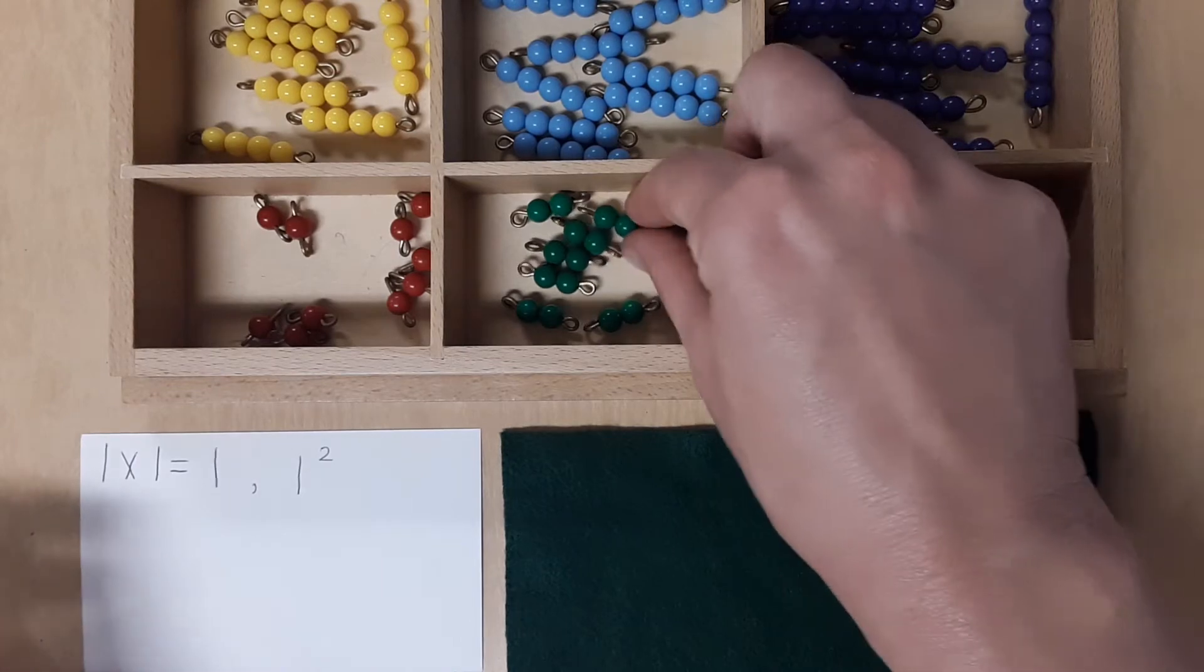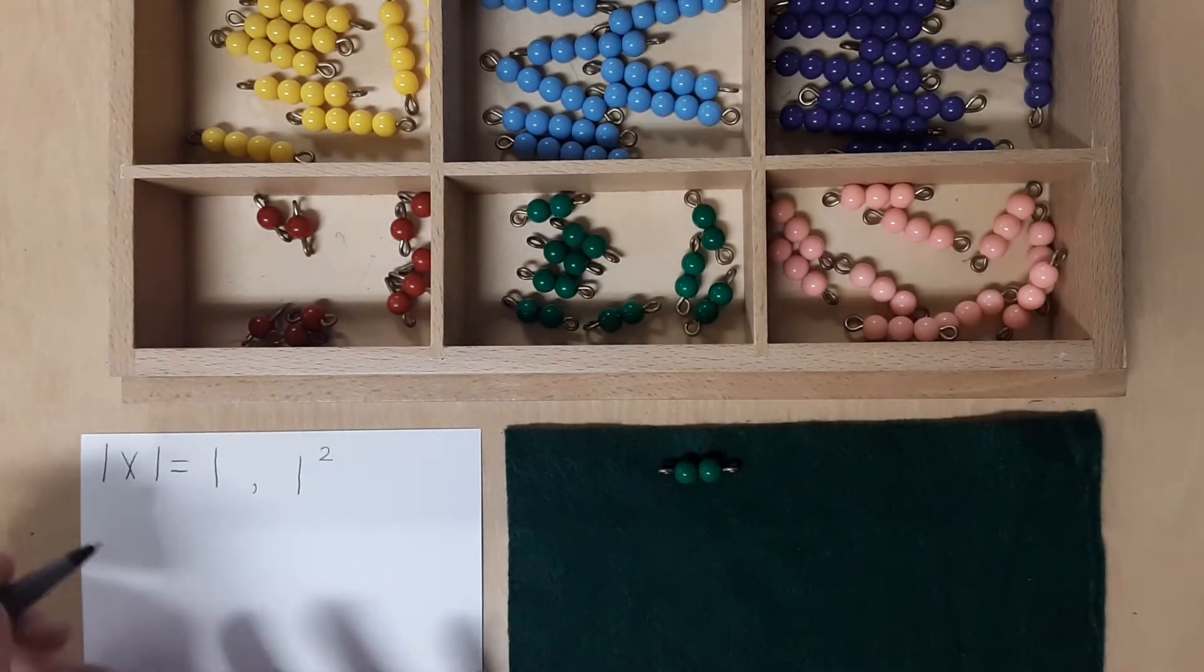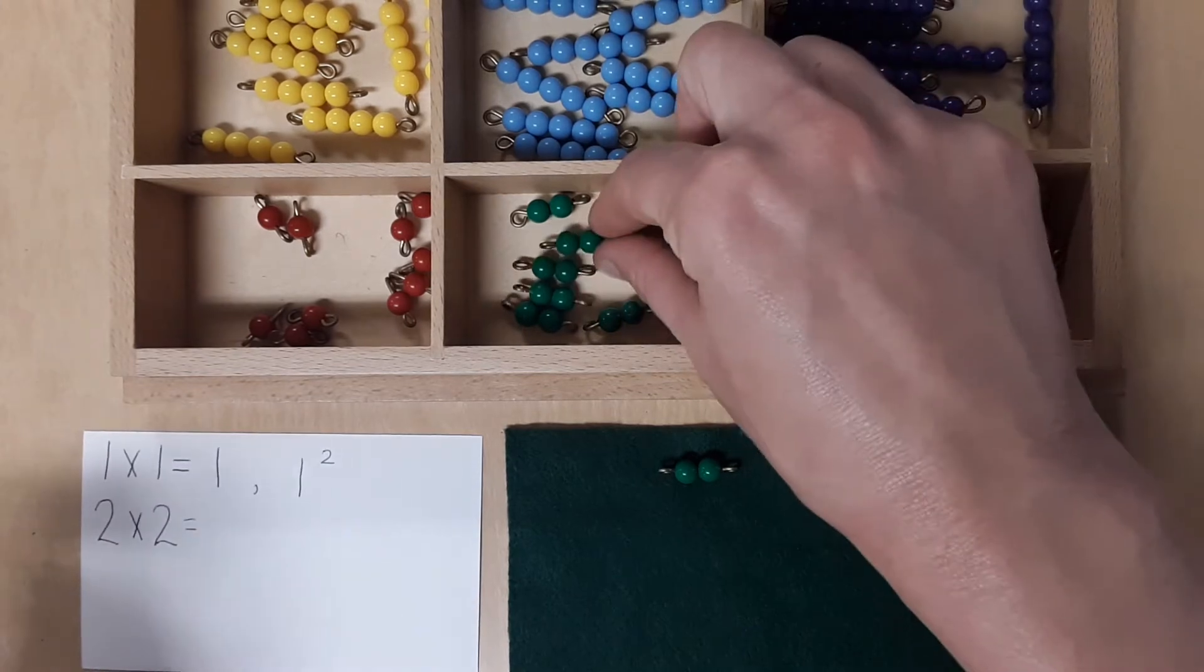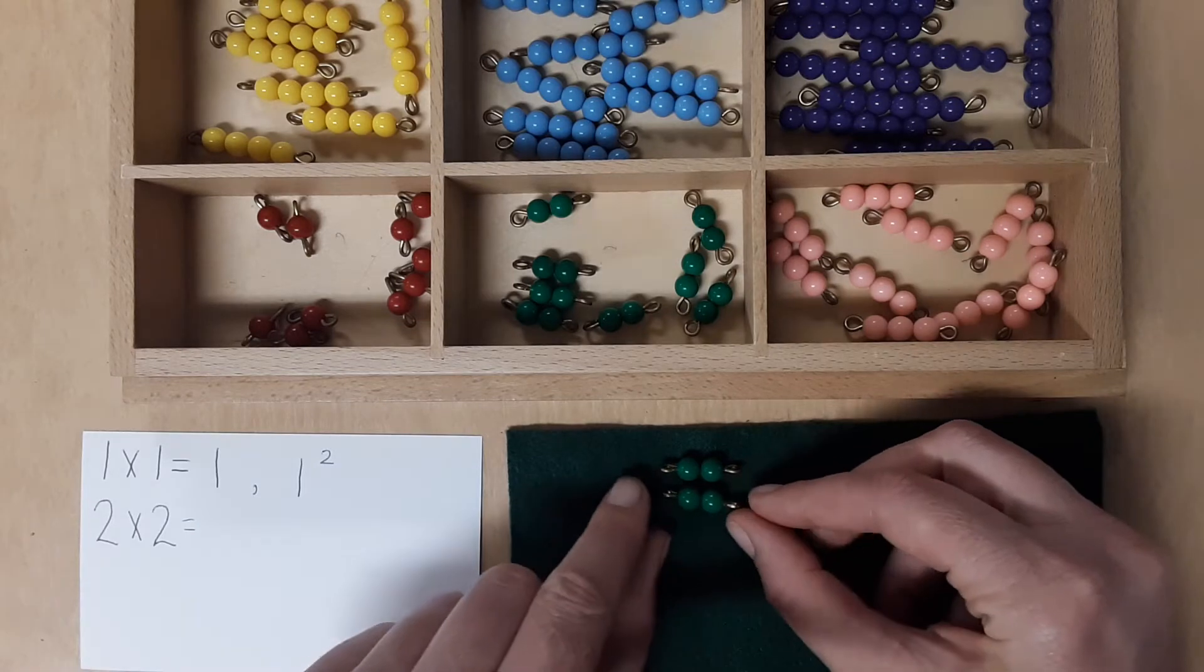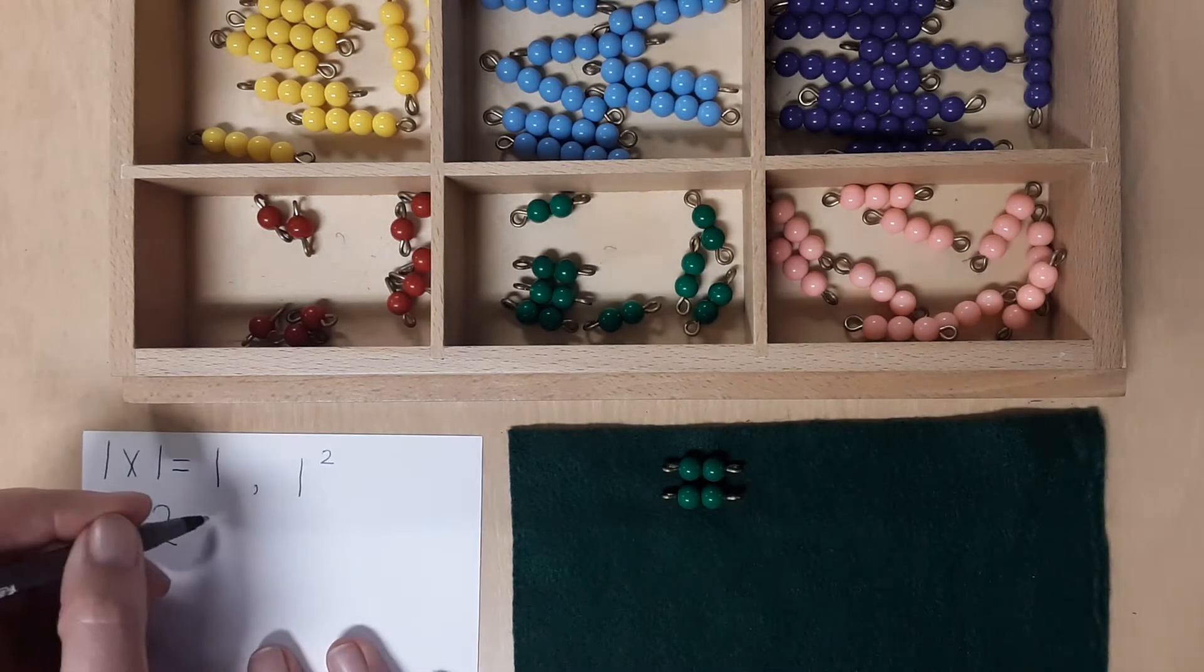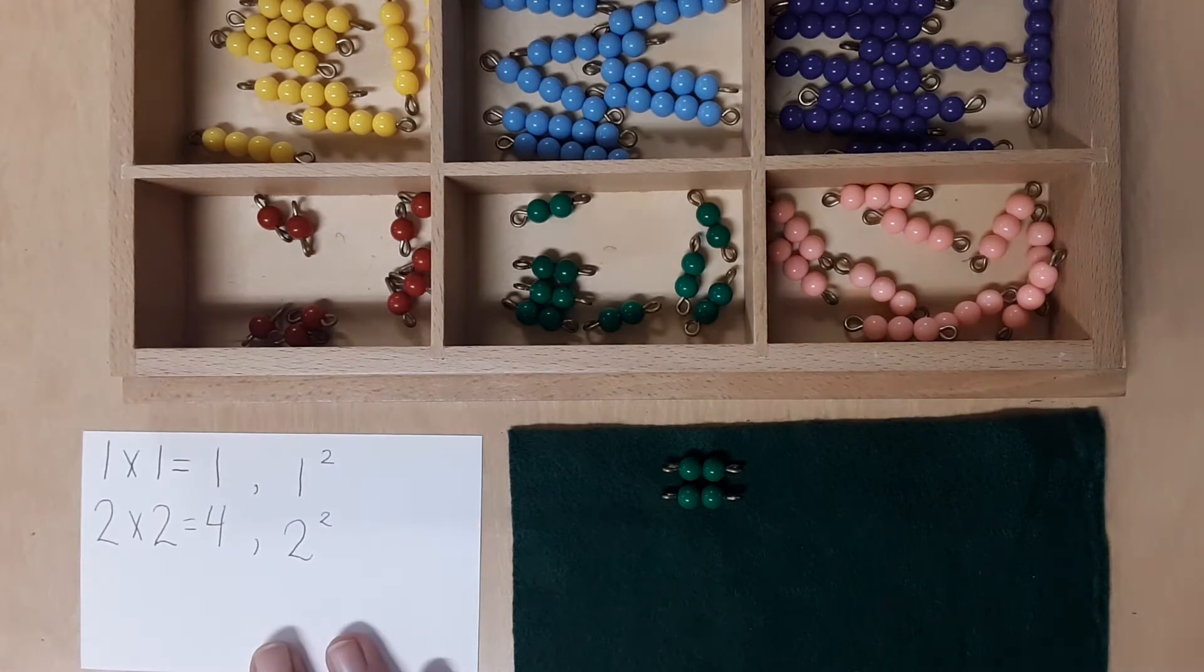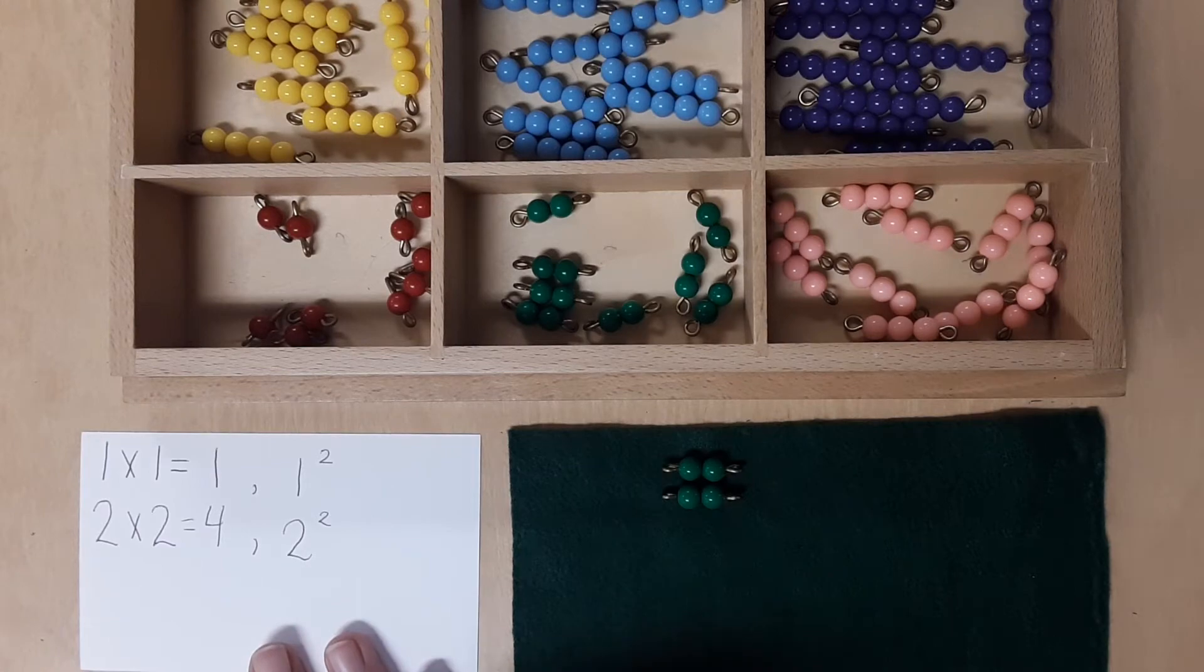Let's do the next one. So the next one would be 2 times 2. So here I have 1, 2, 3, 4. And we can also write that as 2 squared. And do you notice what shape it makes? Did you say a square?